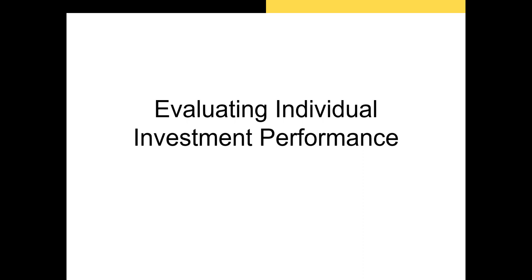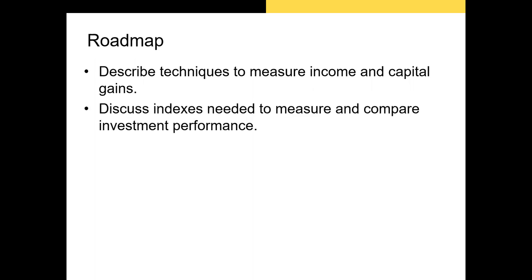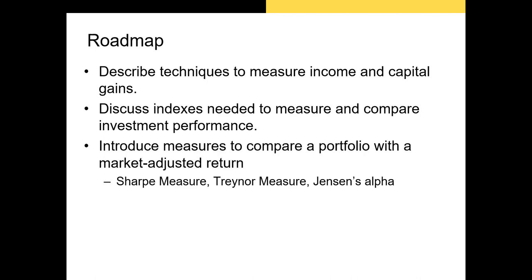In this section, we're going to discuss how you actually evaluate individual investment performance. I'll start off by describing the techniques we use to measure income and capital gains, then we'll discuss the indexes we often use to compare our portfolio performance to, and finally the metrics we use when we want to examine how our portfolio performed — our alpha based on the CAPM, or our risk-adjusted return using the Sharpe measure or the Treynor measure.